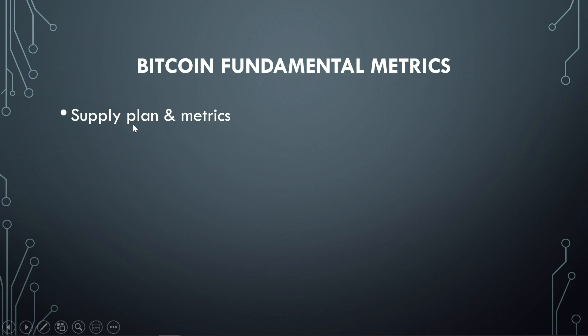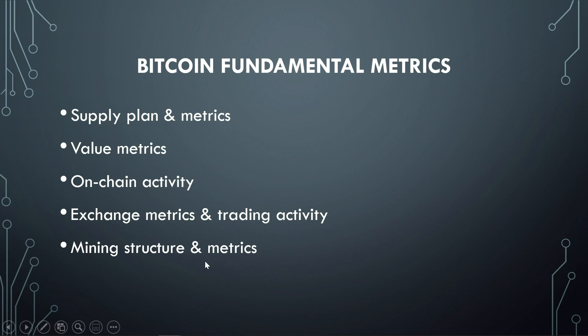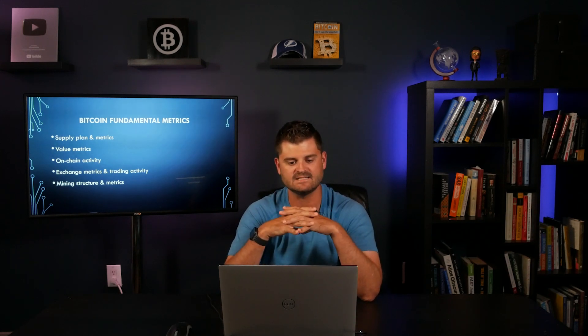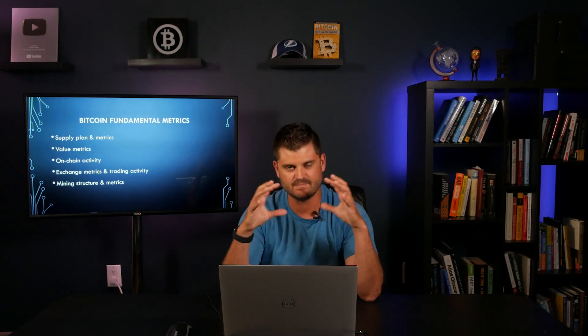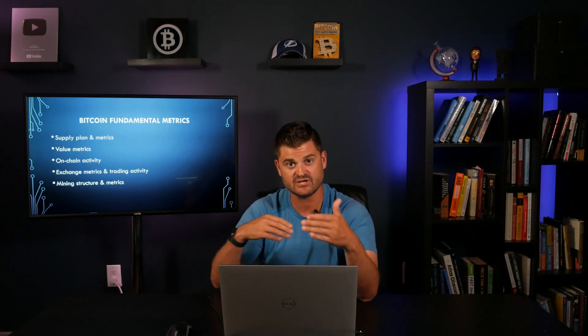Let's look at the specific categories of fundamental metrics for Bitcoin. The first is supply plan and metrics. The second is valuation metrics. The third is on-chain activity. Number four is exchange metrics and trading activity. And number five is mining structure and metrics around mining. This has nothing to do with sales or price-to-earnings ratios — it's everything specific to the Bitcoin protocol and how people are using and exchanging Bitcoin, either peer-to-peer or over an exchange.